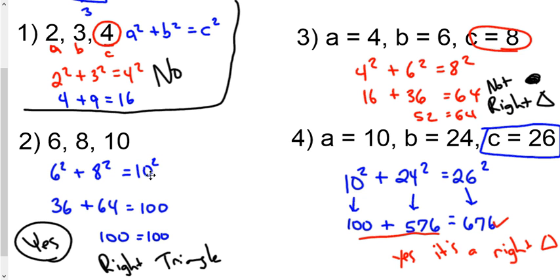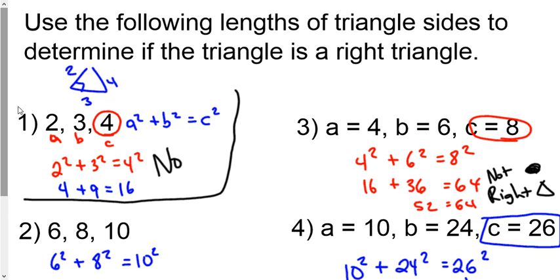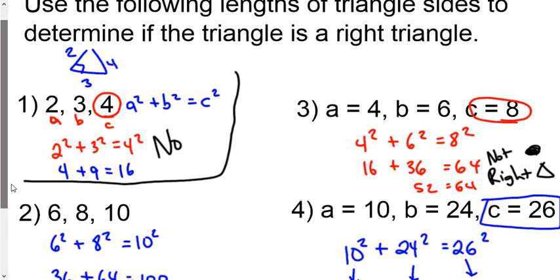All right, so Pythagoras came up with this idea that just stated the sum of the squares of the legs equals the square of the hypotenuse. And when we're given three legs of a triangle, we can plug them into that relationship, square the legs and add them together, and then square the hypotenuse and see if the two sides equal each other. If they do, we say yes, it's a right triangle. Like we said on numbers 2 and 4, if they don't equal each other, like 13 equals 16, it's not a right triangle.